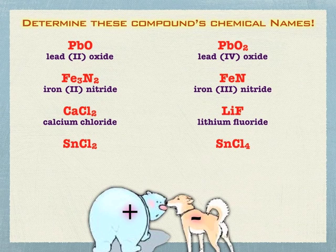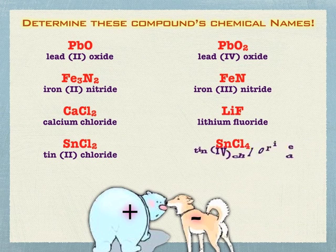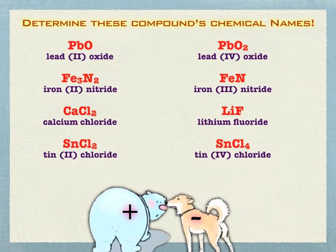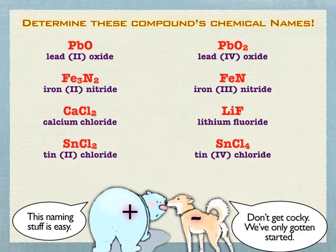Don't forget to spell fluoride the right way. Then we have two tin compounds: tin(II) because you need a 2 charge to balance two chlorides in SnCl₂, and tin(IV) because you need a 4 charge to balance four chlorides in SnCl₄. I went through those pretty fast, so take your time and make sure you understand how we got those. If you need to visually draw them out, do it — whatever technique works for you, as long as you get it correct.